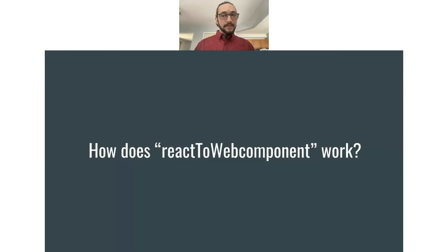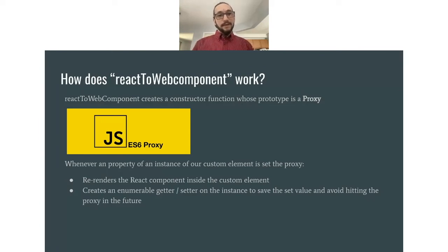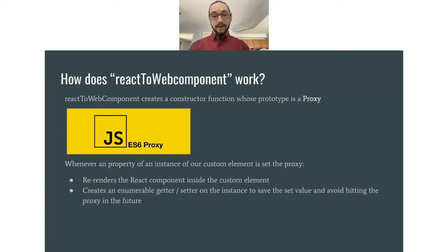Now let's look at how React to Web Component works internally. It creates a constructor function whose prototype is a Proxy — an ES6 JavaScript feature available in all modern browsers. This proxy acts as a trap: whenever a property of an instance on our custom element is set, the proxy re-renders the React component inside the custom element, and creates an enumerable getter and setter on the instance to save the set value and avoid hitting the proxy in the future.